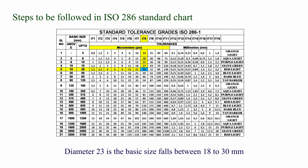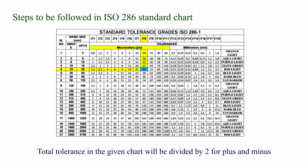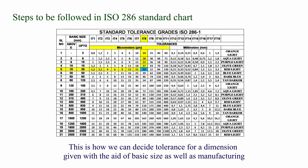Diameter 23 is the basic size, which falls between 18 to 30 mm. The IT grade is IT8. From the chart, we can see the tolerance is 33 microns, which is 0.033 mm. The total tolerance from the chart is divided by 2 for plus and minus. This is how we can decide the tolerance for a dimension given, with the aid of basic size as well as the manufacturing process.